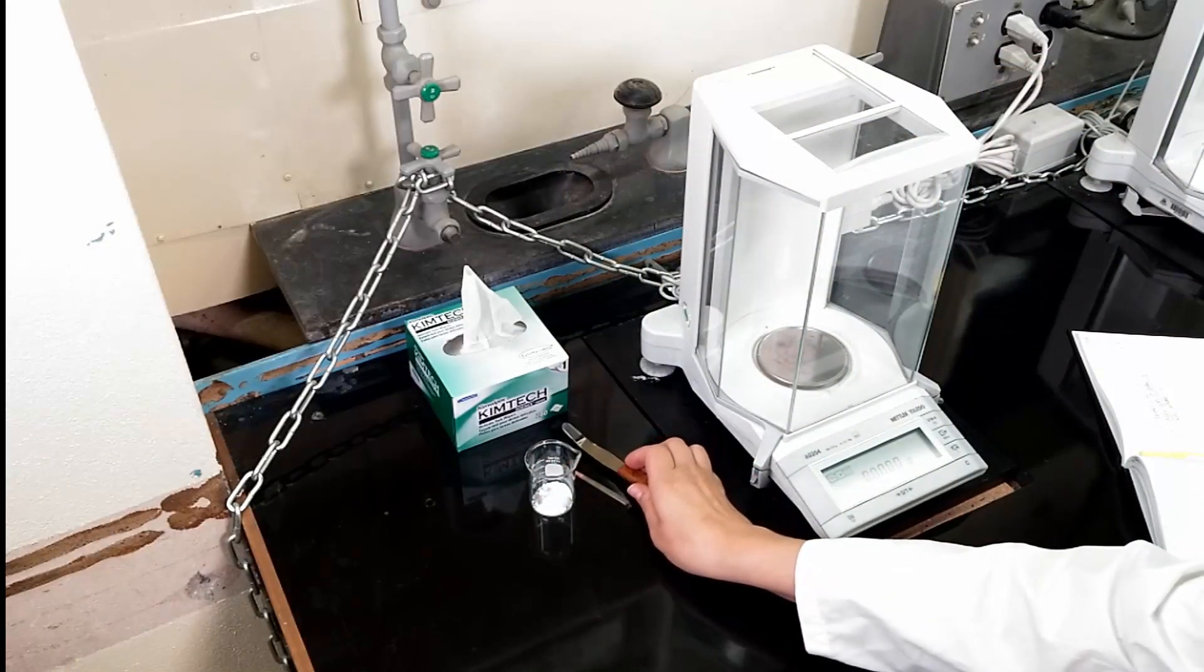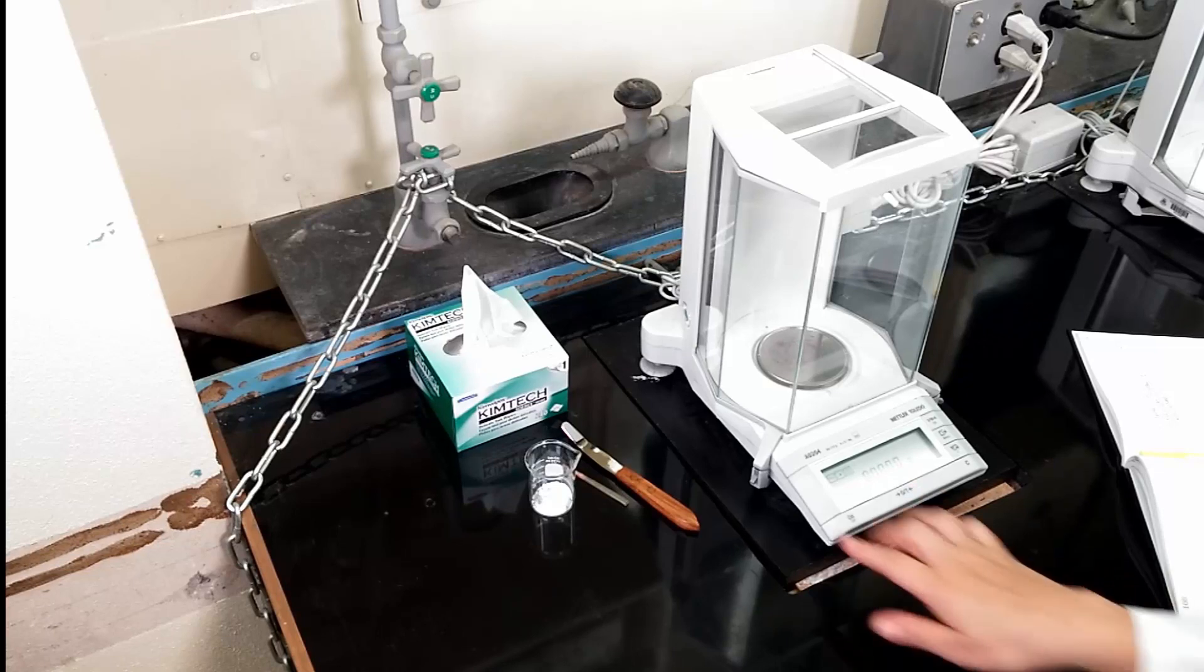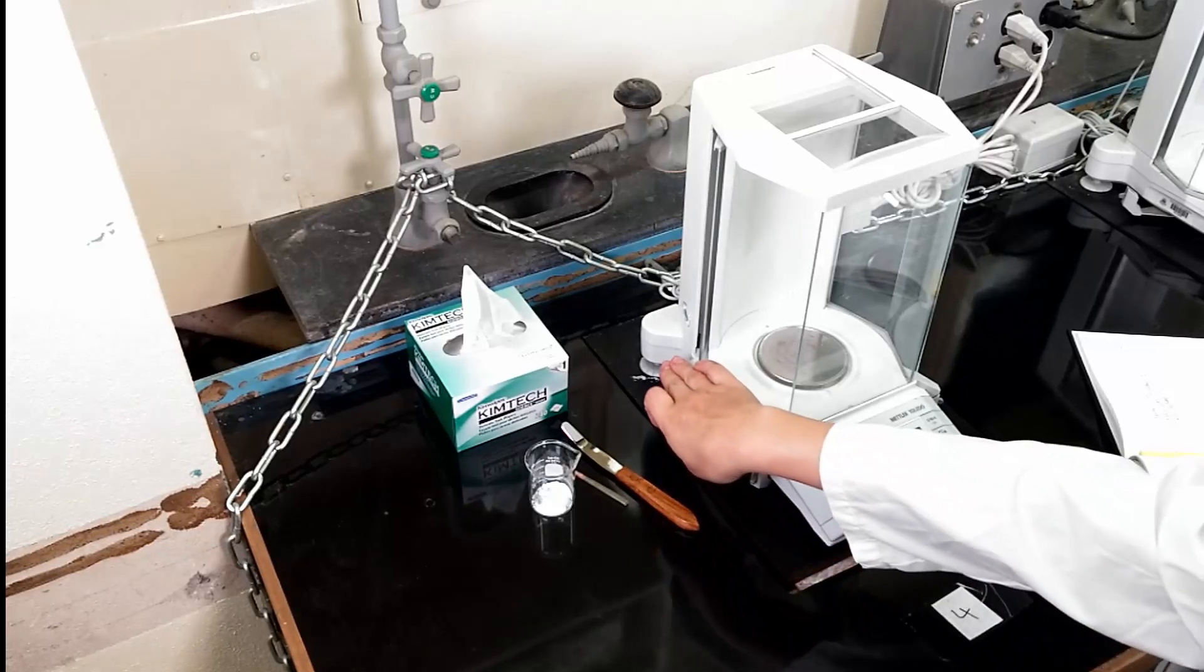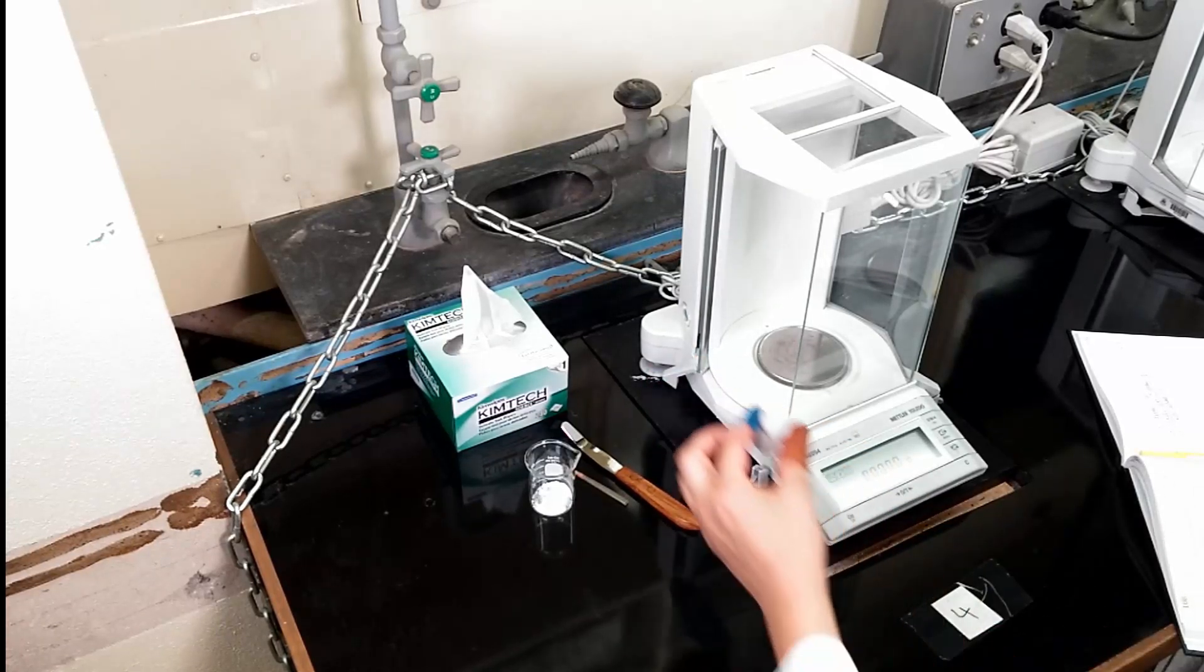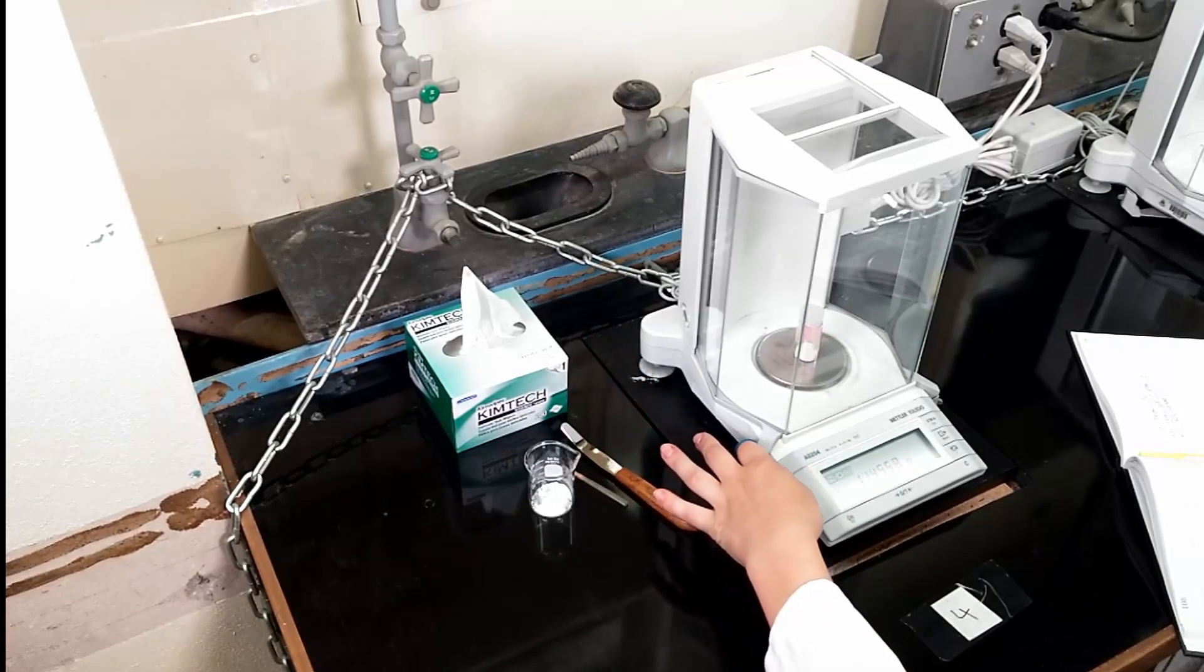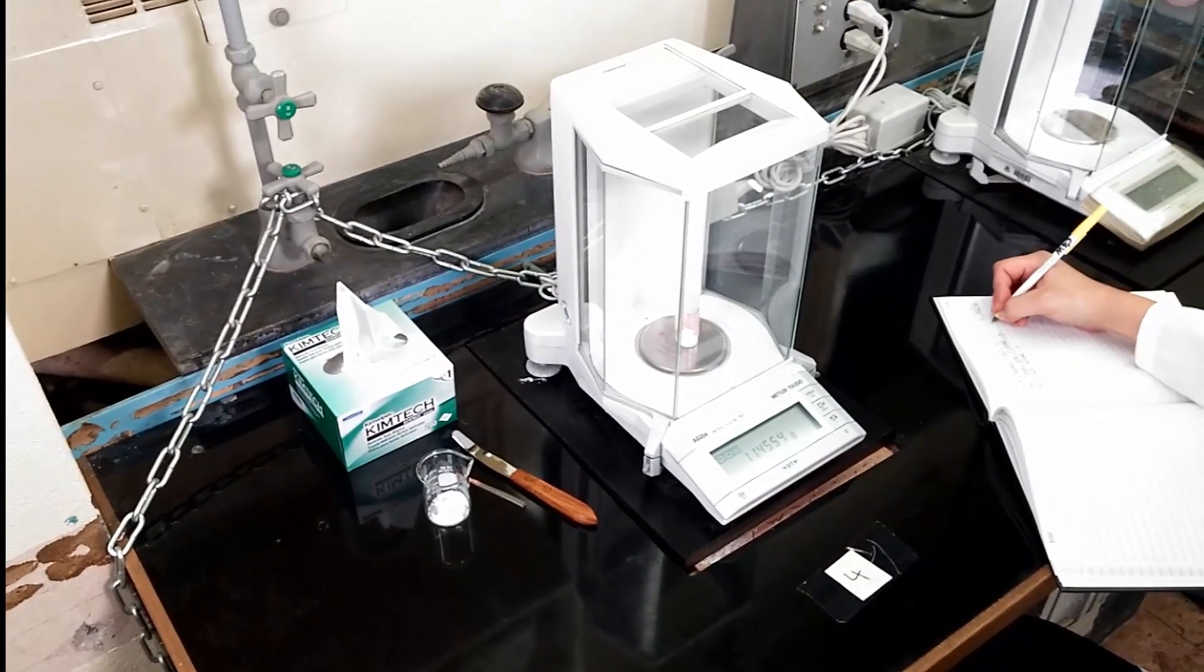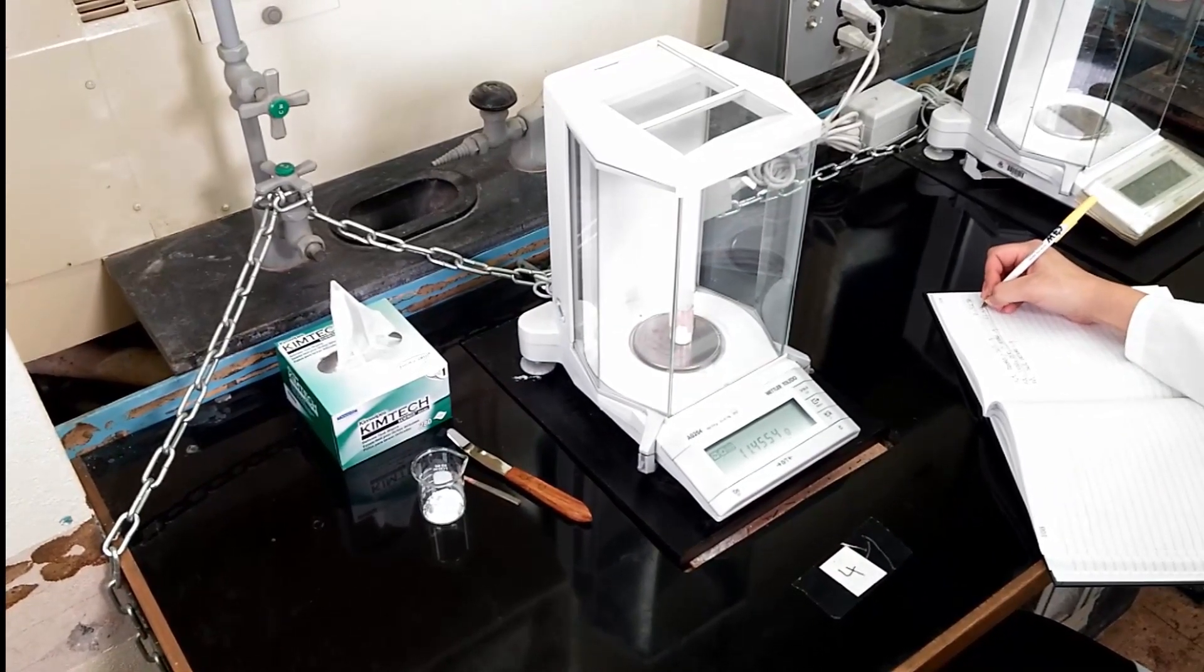Lastly, reweigh the container by zeroing the same analytical balance used to weigh the initial container mass. Place the container onto the center of the balance pan and close all doors of the balance. Once a stable reading is achieved, record the mass in a laboratory notebook.